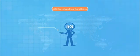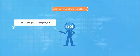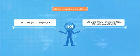Condition 1: a next-generation core network, an NGC, must be deployed. Condition 2: the NGC must send NR control plane signalling directly to the 5G base stations. If these conditions are not met, it can't be called standalone networking.